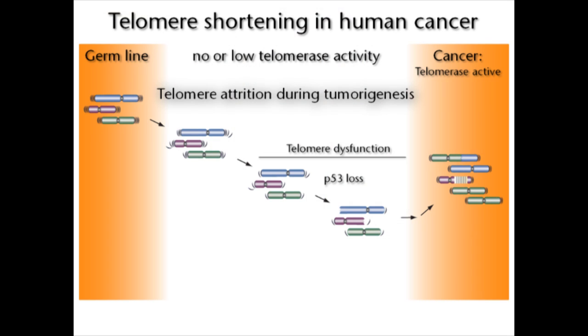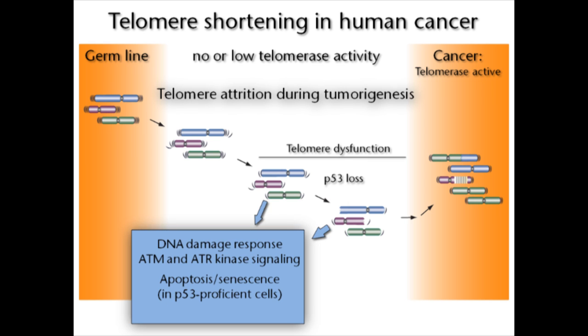Telomere shortening occurs during the early stages of human tumorigenesis, before telomerase is activated. When this shortening impairs the protective function of telomeres, cells perceive their chromosome ends as sites of DNA damage and activate the ATM and ATR DNA damage checkpoints. So most likely, many human tumors progress through a period where they experience their telomeres as sites of DNA damage and have active DNA damage signaling.